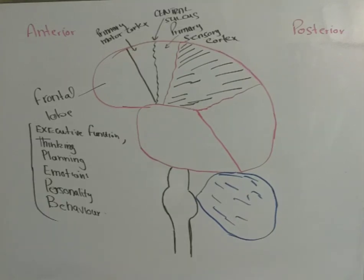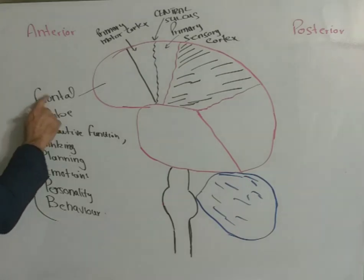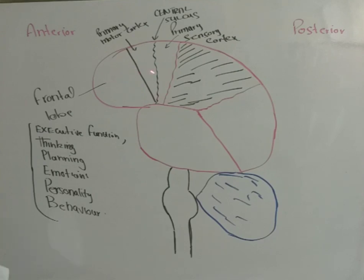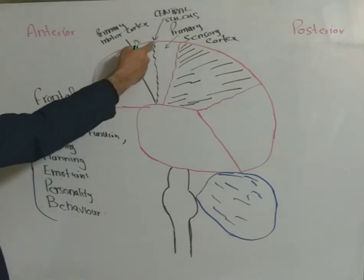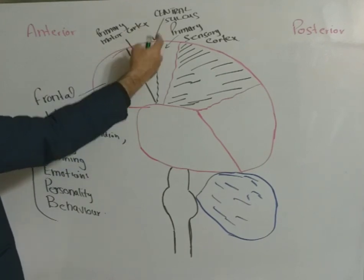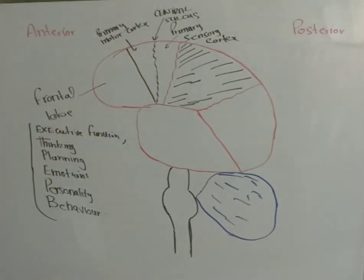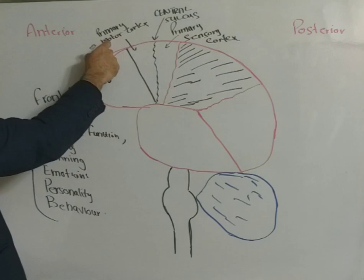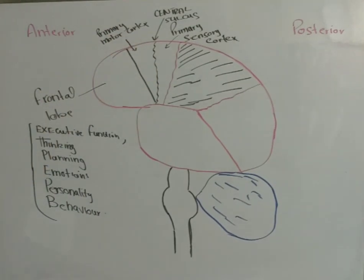All these lobes and parts of the brain have certain functions. The frontal lobe has a very important anatomical landmark: its posterior portion is subdivided into two very important portions by the central sulcus. Posterior to the central sulcus is the primary sensory cortex, and anterior to it is the primary motor cortex. As the names imply, these two parts of the frontal cortex are involved in sensation, perception, and execution of motor activity.